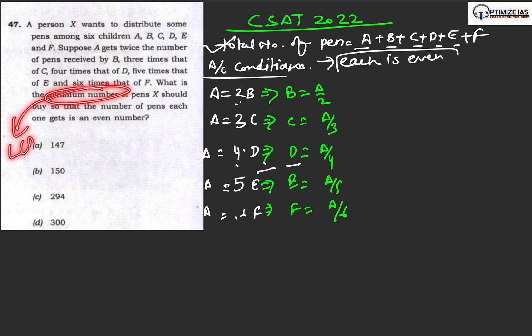The point here is the minimum number it is talking about, so it is talking about the concept of LCM. The condition is that we are assuming that the total number of pens will be the summation of all these children having pens A, B, C, D, E, F. This is the first thing.